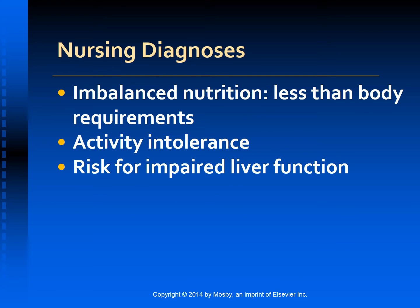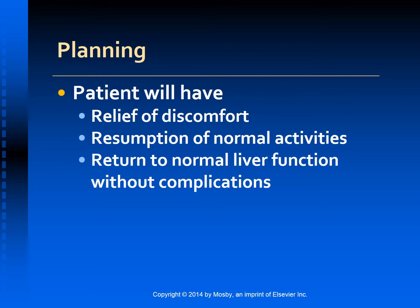Nursing diagnoses include imbalanced nutrition: less than body requirements related to anorexia and nausea; activity intolerance related to fatigue and weakness; and risk for impaired liver function related to viral infection. The goals are that the patient will have relief of discomfort, be able to resume normal activities, and have returned to normal liver function without complications.